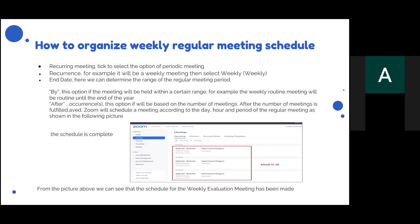If the meeting will be held within a certain range — for example, the weekly routine meeting will run until the end of the year — select that option. If it will be based on a number of occurrences, once that number is fulfilled, Zoom will schedule the meeting according to the day, hour, and period. From the picture, we can see that the schedule for the weekly evaluation has been made.